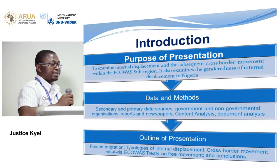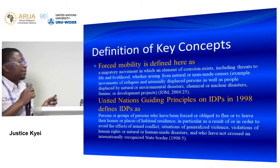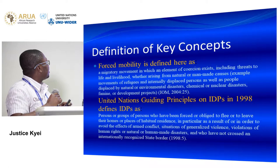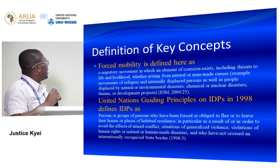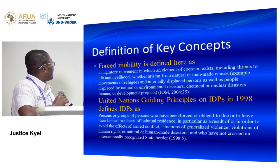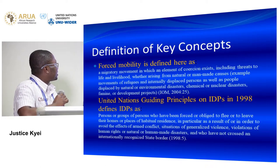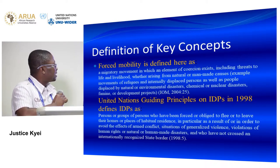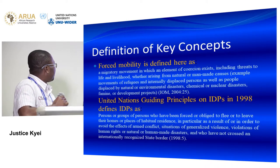During the discussion, IDP will be the acronym for internally displaced persons. To follow the discussion, some definitions are very important. Forced mobility is something I will be using very often. Forced mobility, taken from the IOM definition, is defined as a migratory movement in which an element of coercion exists, including threats to life and livelihood, whether arising from natural or man-made causes — for example, the movement of refugees and internally displaced persons, as well as people displaced by natural or environmental disasters, chemical or nuclear disasters, or farming or development projects.